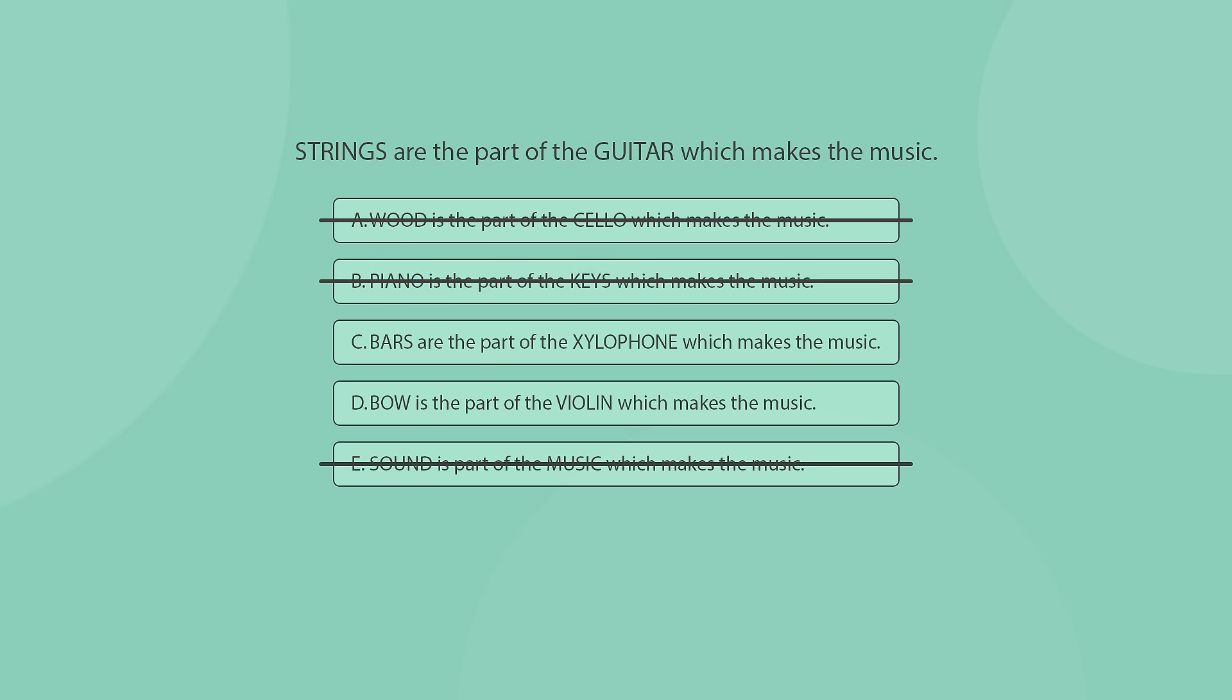We are left with options C and D. To decide which of them is the correct one, we will have to look closer at the terms and realize that while bars are an integral part of the xylophone, same as with the strings of a guitar, a bow is an external part to the violin. Therefore, the correct answer is C.